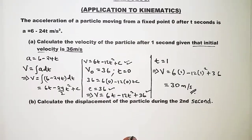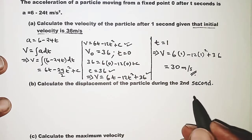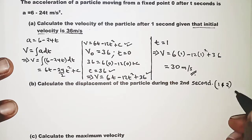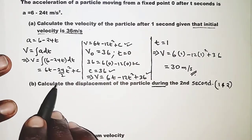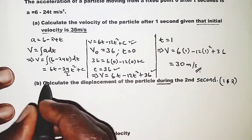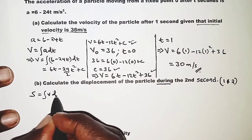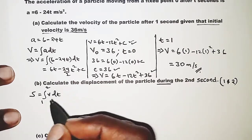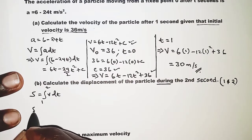Moving on to part (b). We are required to calculate the displacement of the particle during the second second. During the second second simply means between t = 1 and t = 2. We need to calculate the displacement the particle moved in that period. Displacement is obtained by integrating velocity, with limits 1 and 2.